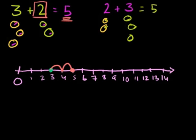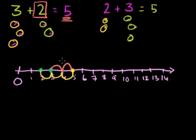When you switch the order, we start at 2 and add 3 objects — in this case lemons or limes. So we go 1, 2, 3, and just like we expected, we got the same thing: 5 again.